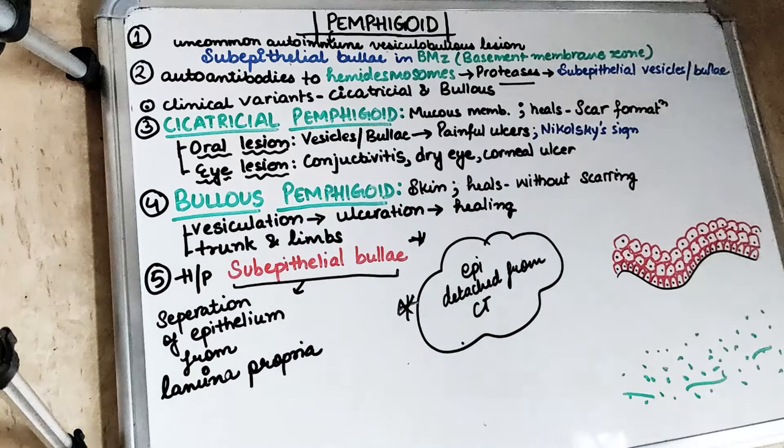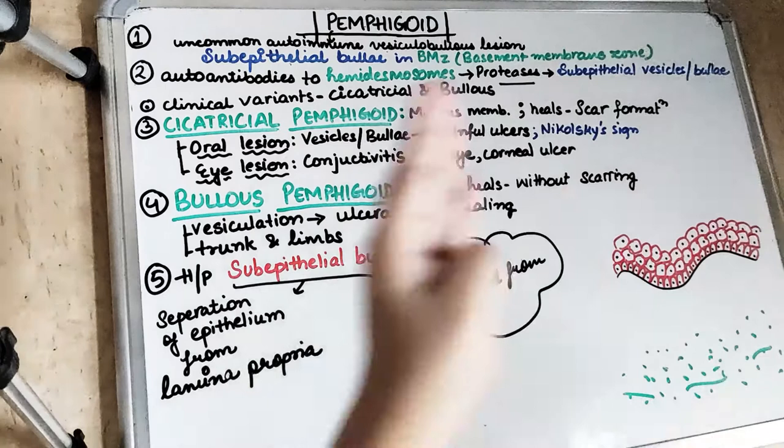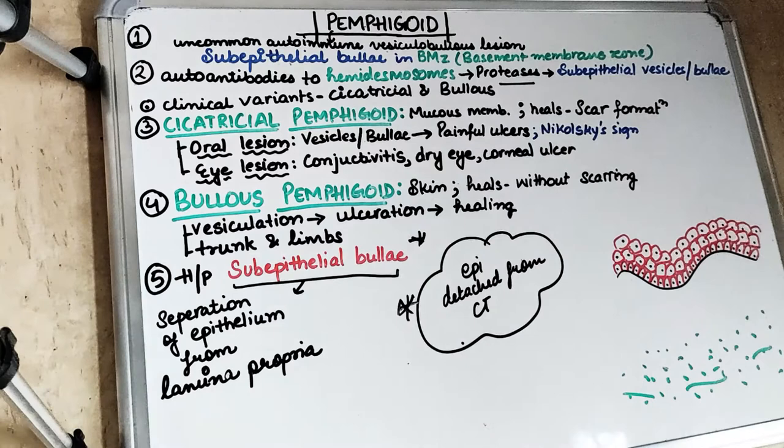In pemphigoid, the epithelium gets separated from the connective tissue. So there is a bulla or vesicle formed between the epithelium and the connective tissue. Unlike pemphigus vulgaris, which we covered in the previous video — where there was a split within the epithelium — in pemphigoid there is no intra-epithelial split. Instead, the epithelium gets separated from the connective tissue.